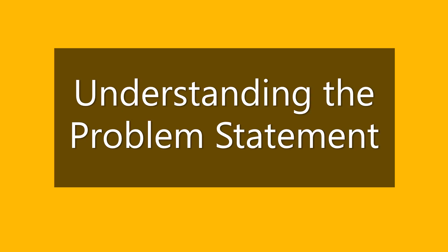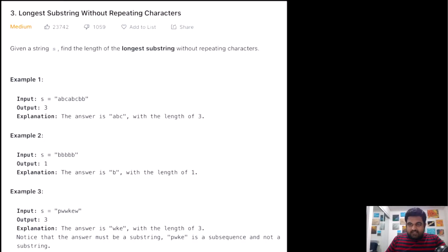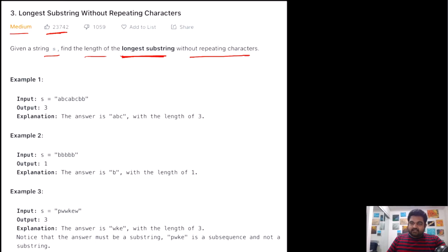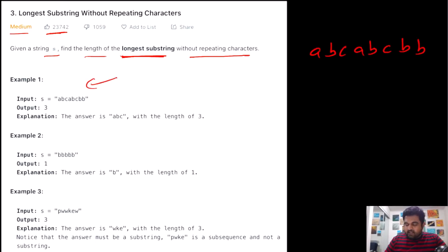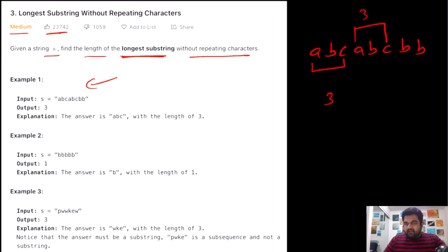I hope you enjoy the video. This is a LeetCode medium problem and one of the most liked problems on LeetCode. We are given a string S and we need to find the length of the longest substring without a repeating character. For example, given a string, the longest substring without repeating characters is ABC, which has length three. We can also find another such substring of length three, and we return three as the answer.